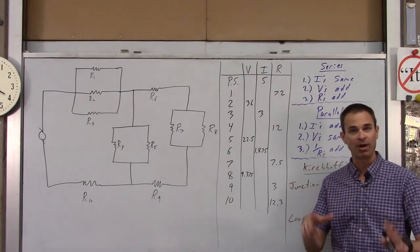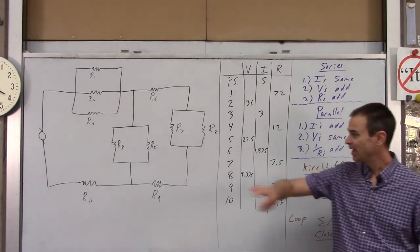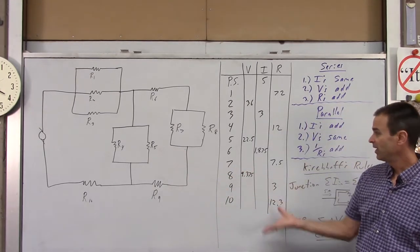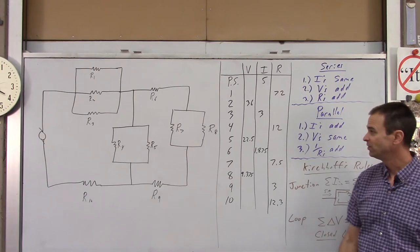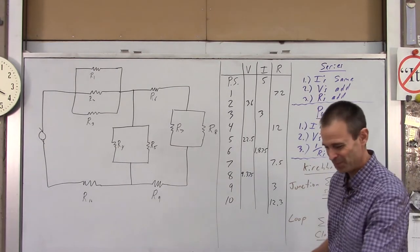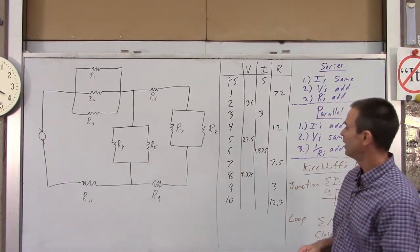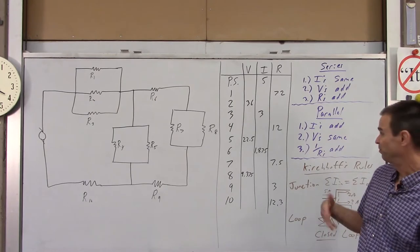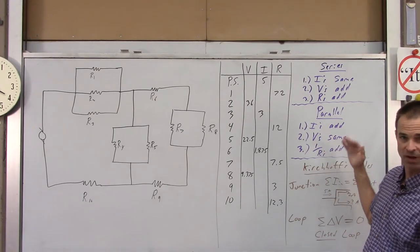So what I would suggest, you might want to go ahead and pause the video here and copy down all the info from the picture, the picture itself, and this chart with all the V's, the I's, and the R's. Now you're ready to go. What we're going to do is fill in the rest of the chart and we're going to be using these rules. We'll probably use almost all of them as we go.